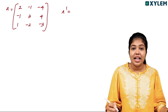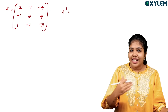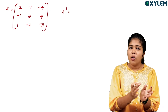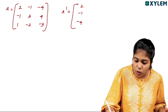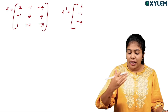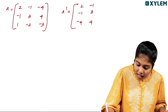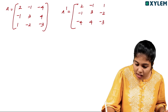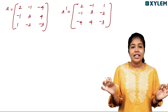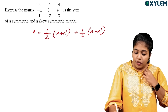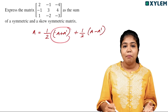If we want to make A transpose, we interchange rows and columns: 1st row becomes 1st column, 2nd row becomes 2nd column, and so on. So A transpose is formed by interchanging the corresponding elements of A.